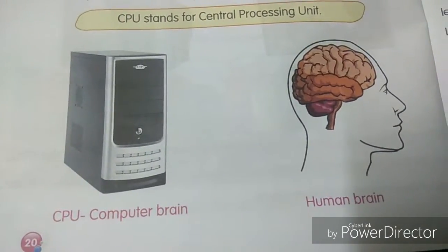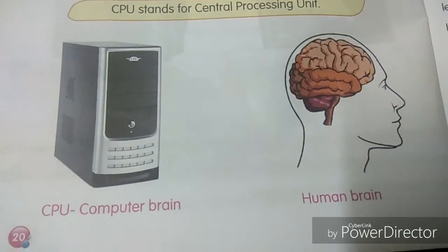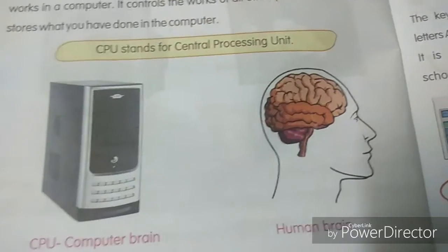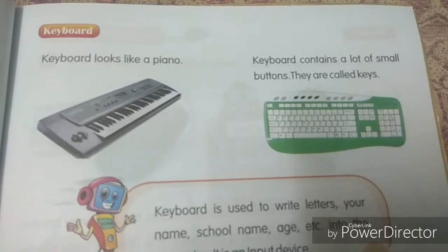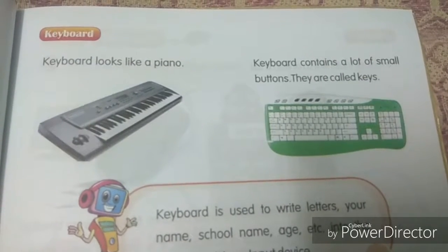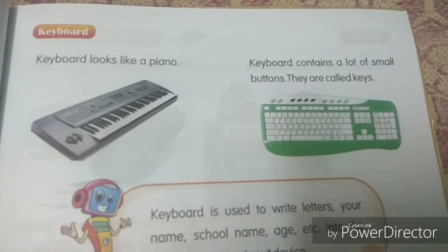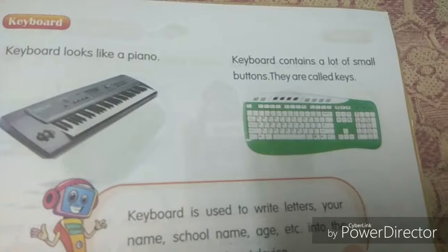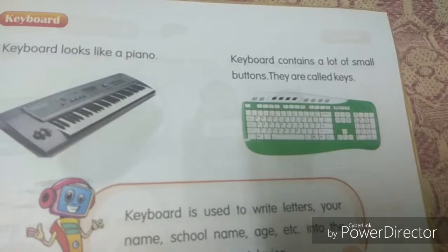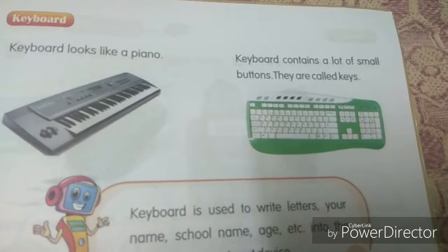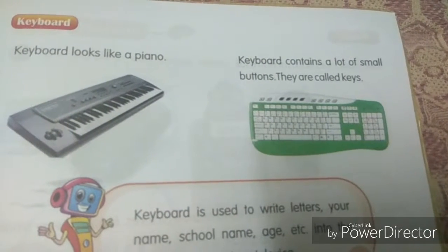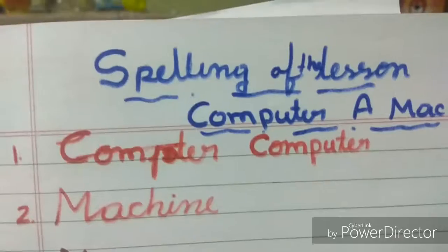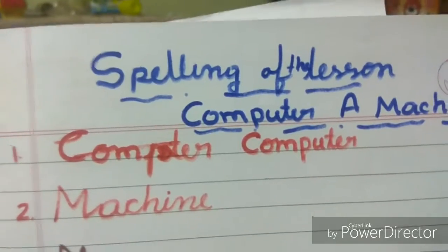CPU. Computer Brain. Human Brain. Keyboard. Keyboard looks like a piano. Keyboard contains a lot of small buttons. They are called keys.